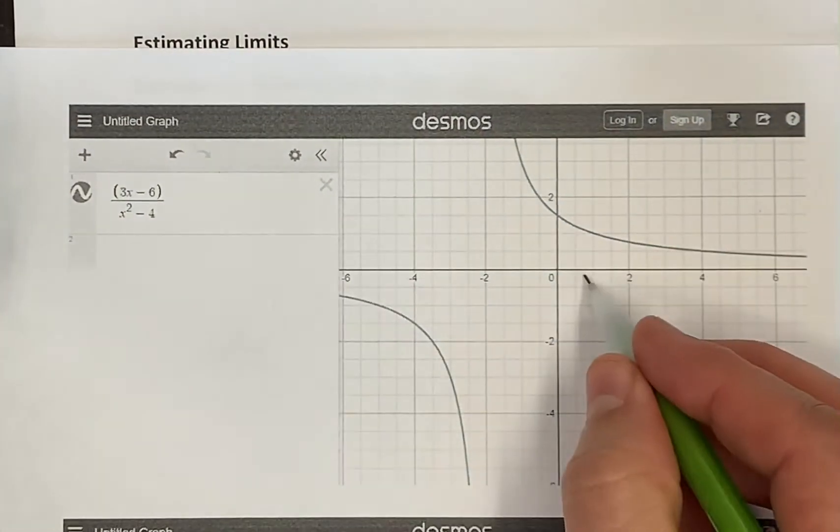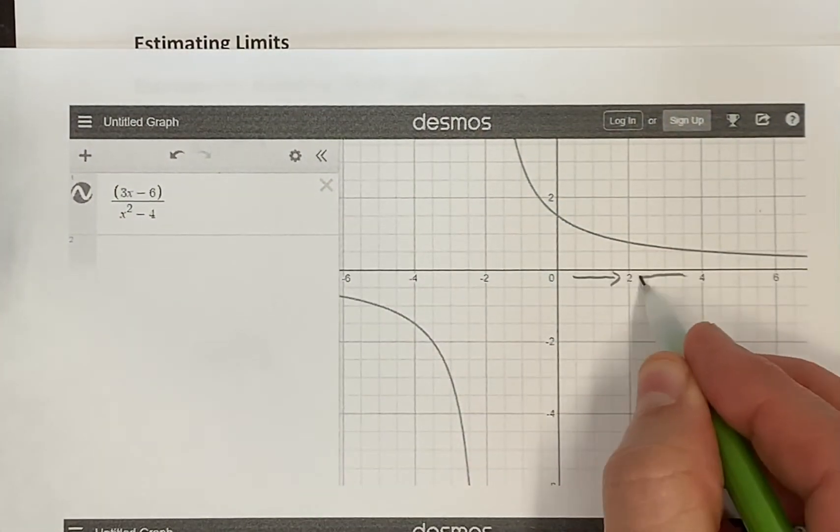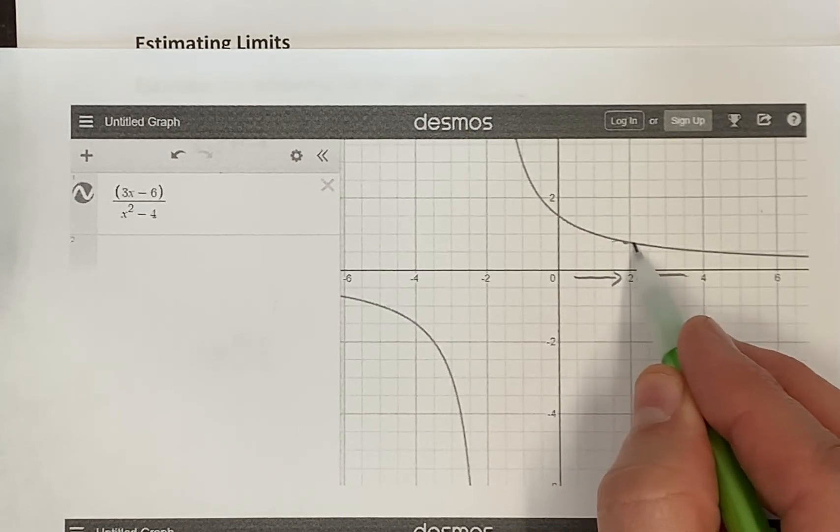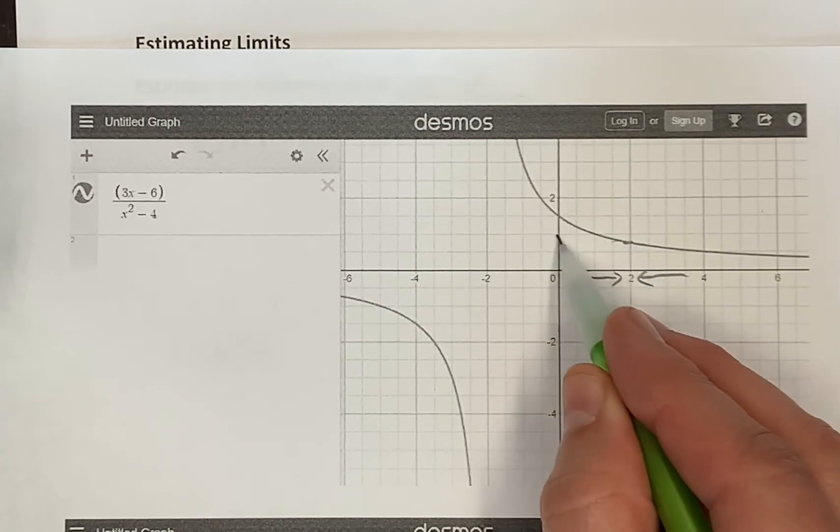As the input gets close to 2, from the left and the right, near not at, the outputs are getting close to something. What is that something? Well, that's 1.